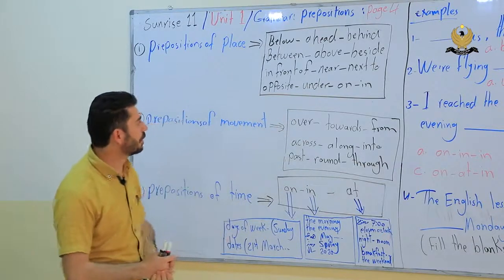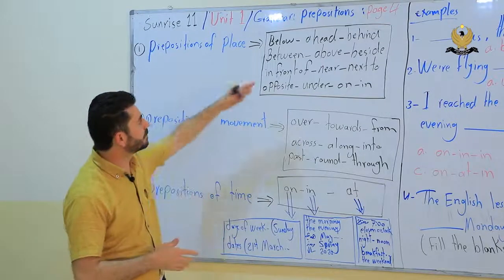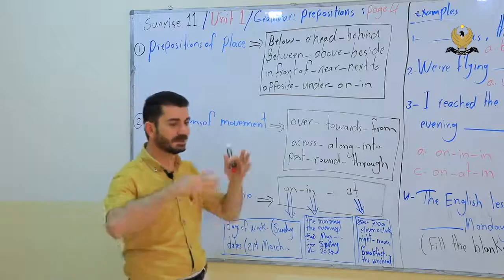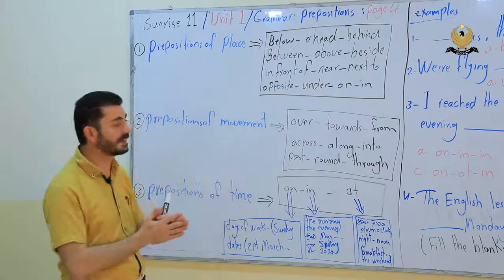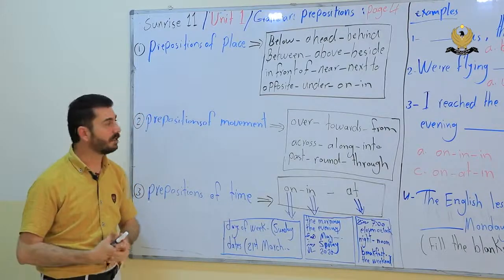Near, next to, opposite, on, in. These prepositions are what we call prepositions of place. If you're talking about a place, it is called preposition of place.